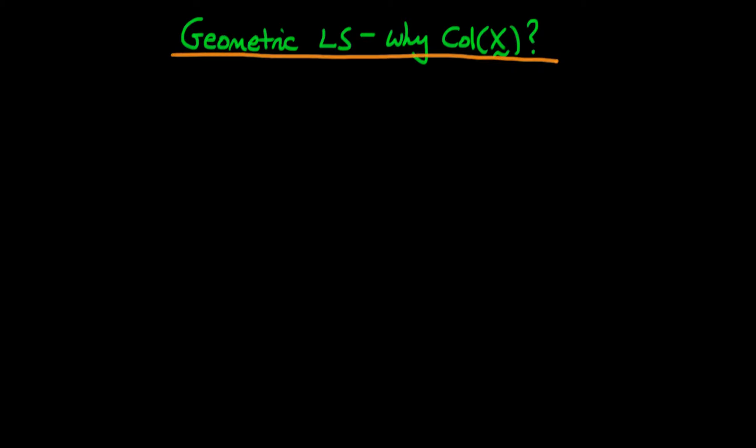In particular, I want to explain why we can think about the column space of the matrix of independent variables X as representing a kind of vector space.